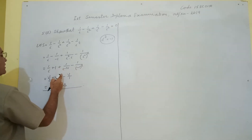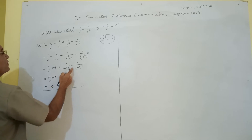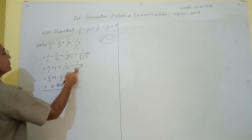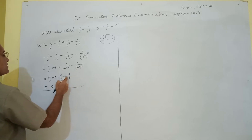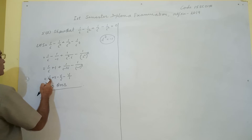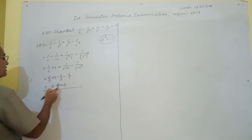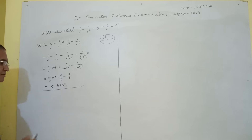By solving, we get: -1/iota + 1 + 1/iota - 1. The +1 and -1 cancel, and 1/iota and -1/iota cancel, so we get 0.